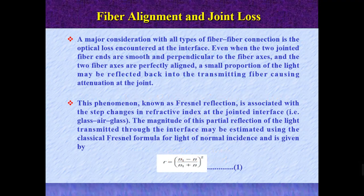A major consideration with all types of fiber-to-fiber connection is the optical loss encountered at the interface. Even when the two joined fiber ends are smooth and perpendicular to the fiber axis and the two fiber axes are perfectly aligned, a small portion of the light may be reflected back into the transmitting fiber, causing attenuation at the joint. This phenomenon is known as Fresnel reflection, associated with the state changes in refractive index at the joint interface — that is, glass-to-air and air-to-glass transitions.